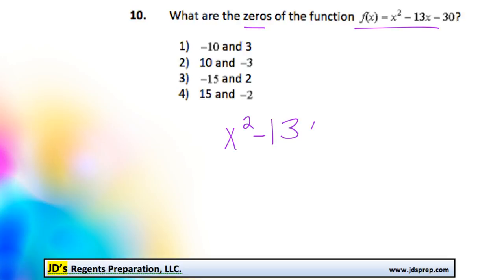We have x squared minus 13x minus 30. So in order to factor this, we're looking for two numbers that multiply to get negative 30 and add to get us our b value, which is negative 13.